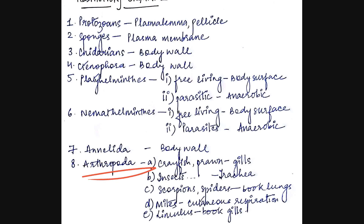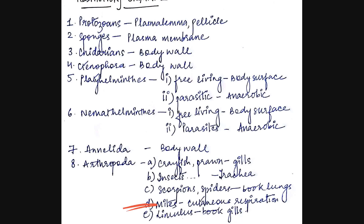Now coming to arthropoda, which is the most diversified phyla. The first is the crayfish and the prawn — they respire through gills, which is termed as branchial respiration. The insects, centipedes, millipedes and ticks respire through trachea, so it is known as tracheal respiration in their case. Scorpions and spiders respire through the book lungs. Whereas the king crab, also known as limulus, respires through book gills. And the mites respire through the skin, undergoing cutaneous respiration.